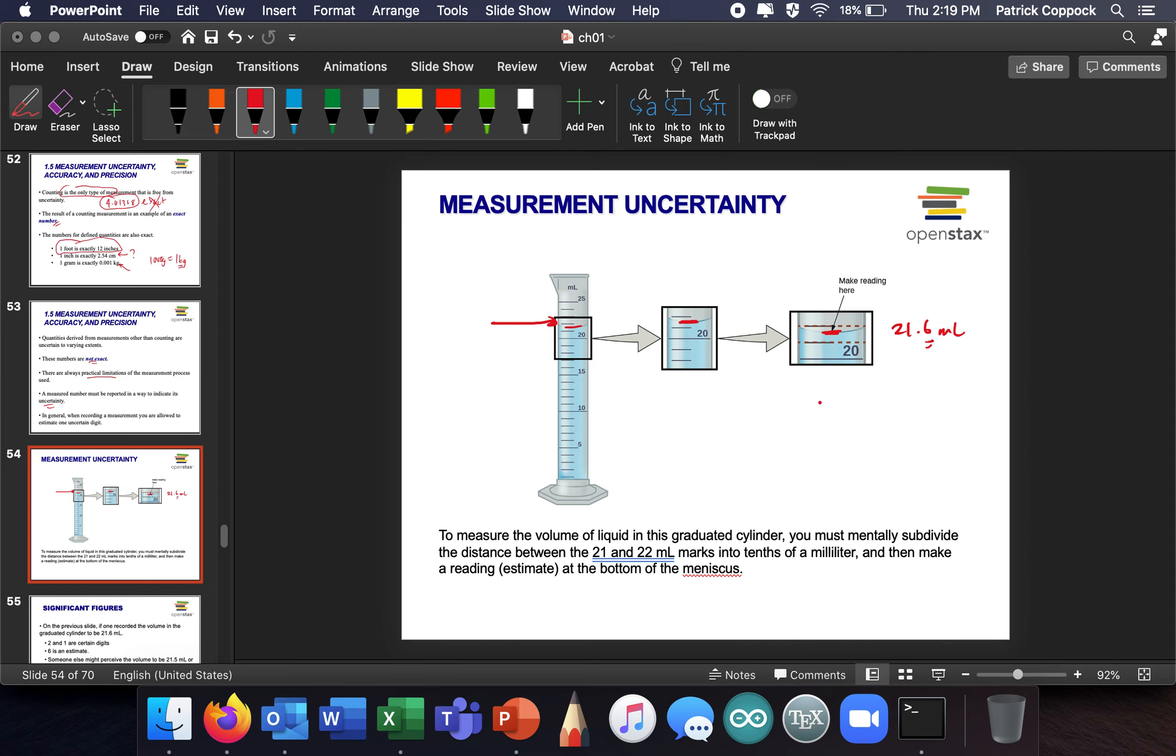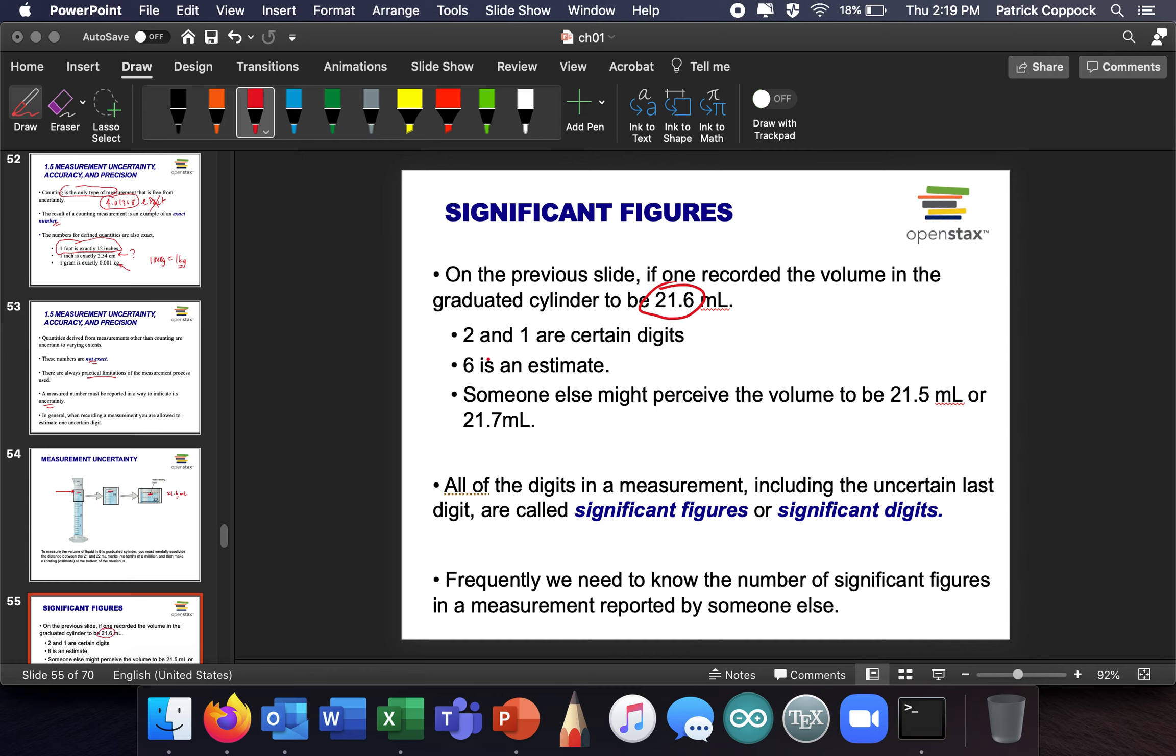I'm going to say 0.6. We know from a future slide that I said 21.6, but if you said 21.5 or someone else said 21.7, that will be totally fine because you are allowed to estimate one digit. It's expected that you'll estimate one digit. Now, all of the digits in the measurement, including the uncertain last digit, are called significant figures or significant digits. We oftentimes shorten this by saying sig figs. So sig figs are significant figures or digits. Include all of them, including the uncertain last one. So there are three sig figs in this number. There are two that were explicit and one that was estimated.